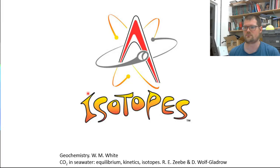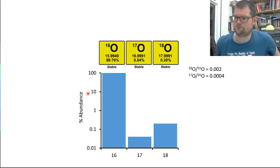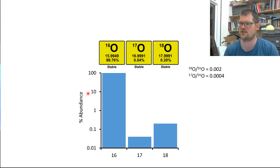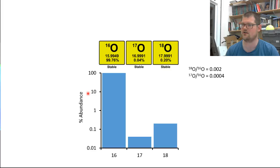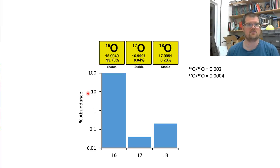So what are isotopes? An element — in this case oxygen — isn't just one type of atom. There are different types of atoms of each element with the same number of protons in the nucleus and the same number of electrons in the outer shells, but they have different numbers of neutrons. So they have different weights. Oxygen is made up of a combination of different isotopes: oxygen-16, 17, and 18, which basically just weigh different amounts.